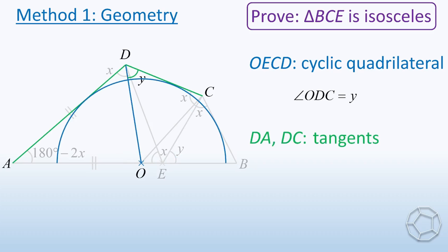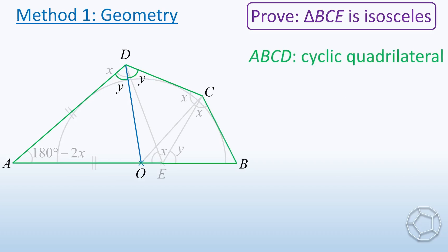Then we look at the tangents DA and DC. So the two angles at point D are both equal to Y. What should be the next step? Consider the green cyclic quadrilateral ABCD again. Angle B and angle D are opposite angles. So angle B equals 180 degrees minus 2Y.